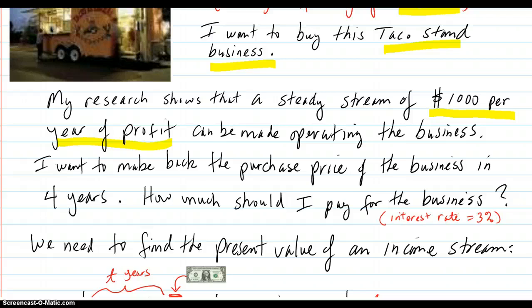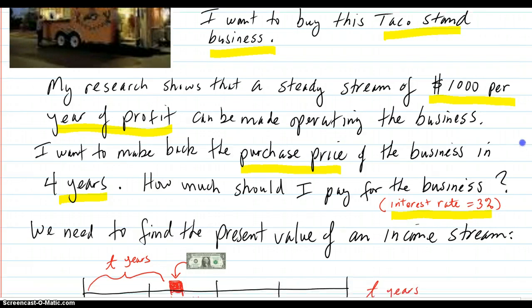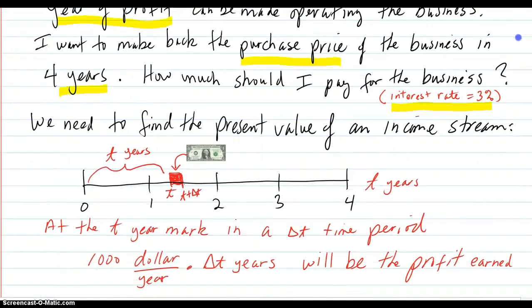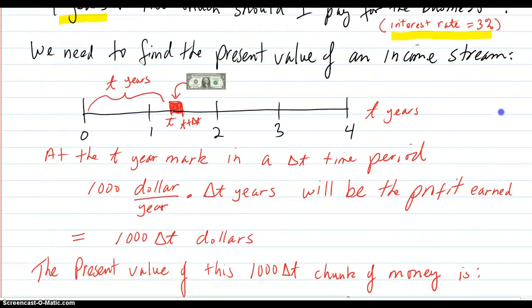I want to make back the purchase price of the business in four years. How much should I pay for the business assuming that the interest rate is 3% and it's compounded continuously? We need to find the present value of the income stream.